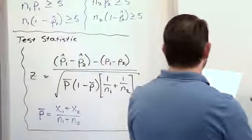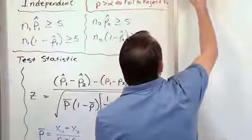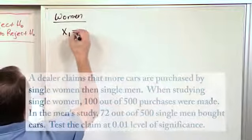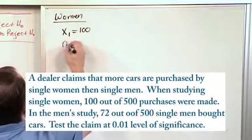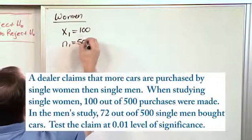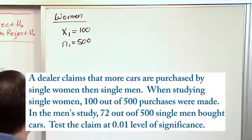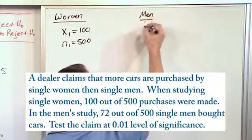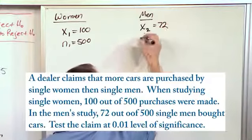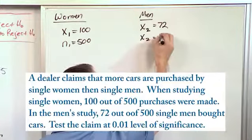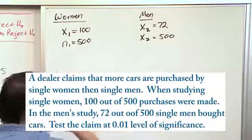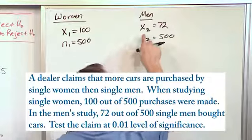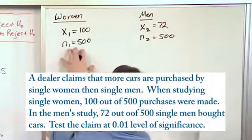Now the first thing we should do is write down the data. So for the women, the respondents said that 100 out of 500 sampled women bought a car in whatever the time period was they were studying. And for the men, they said that 72 out of 500 bought a car. Okay? Now notice that N, whoops, I mislabeled this. This should not be X2, this is N2. So the sample size for women was 500.